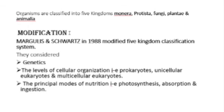That modification was introduced by these scientists in 1988. That is all about the five kingdom classification system and its basis. In the next lecture, we will discuss the general characters of these five principal groups in detail.